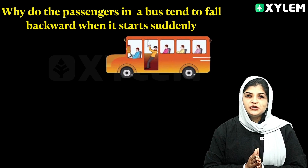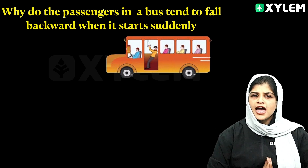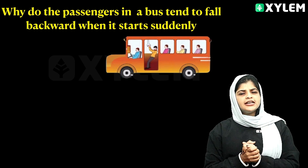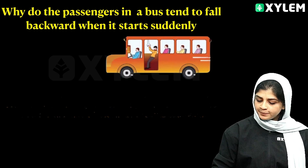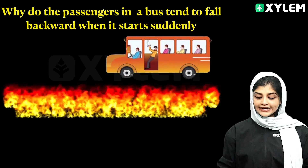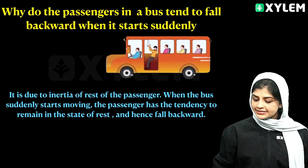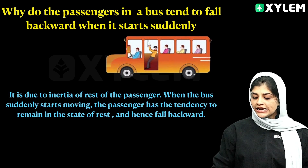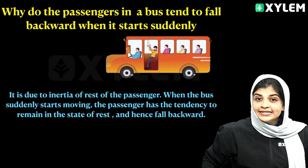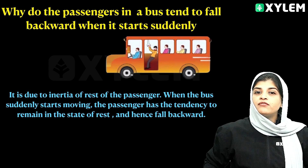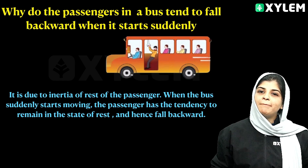It is due to the inertia of rest of the passenger. When the bus suddenly starts moving, the passenger has a tendency to remain at the state of rest, and hence falls backward.